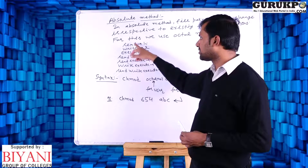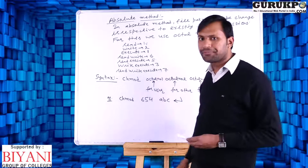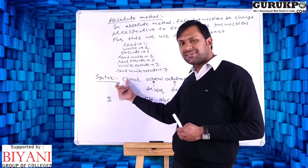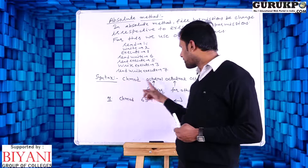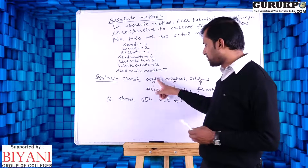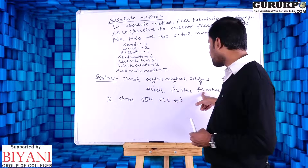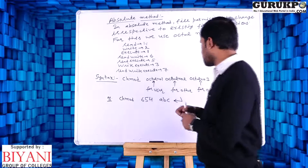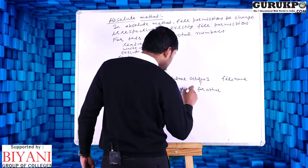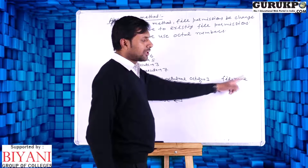The syntax is: chmod followed by three octal numbers, then the file name. The first octal number is for user, second is for group, third is for other.